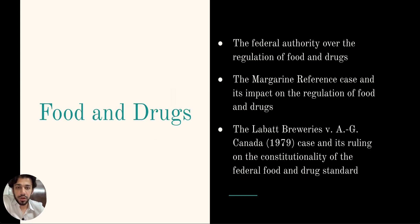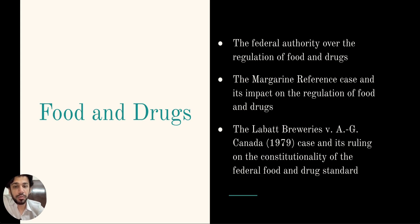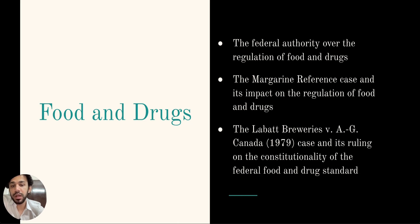The federal government has the power to create laws related to production and sale of food and drugs. The Margarine Reference case is an example of how government can use its power to protect public health. In this case, the federal government had passed a law prohibiting manufacturing or sale of margarine, claiming it was injurious to health. The Supreme Court of Canada ultimately struck down this law, as it was conceded by the government that margarine was not actually injurious to health.